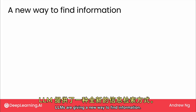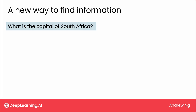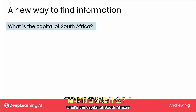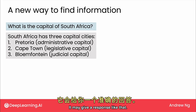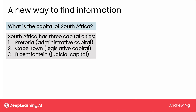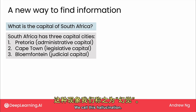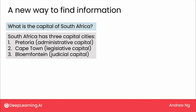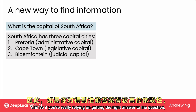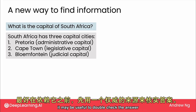LLMs are giving a new way to find information. For example, if you ask what's the capital of South Africa, it may give a response like that. A LLM can sometimes make facts up — we call this hallucination. And so if you're really relying on getting the right answer to a question, it may be useful to double check the answer with an authoritative source before counting on it.